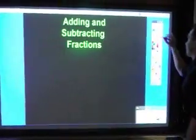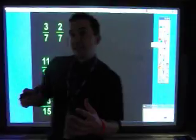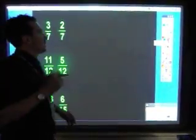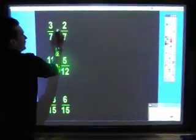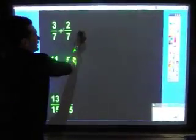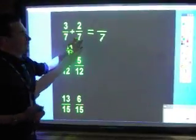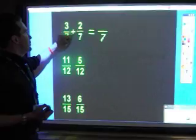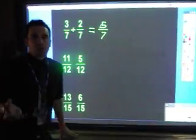So, the first thing we're going to look at is if the denominator, that's the bottom number, if that's the same, it's actually quite easy. So we're going to look at adding first. If the bottom number's already the same, the denominator, it's going to be over 7. The denominator stays the same, 3 plus 2, 5. Just add the numerator, which is the top number.